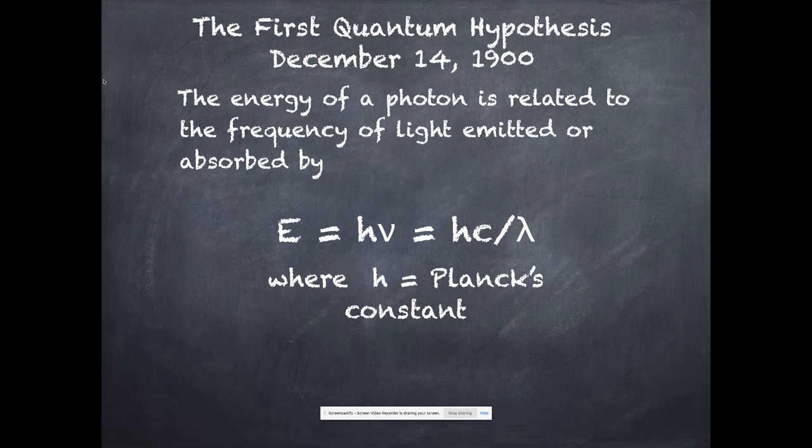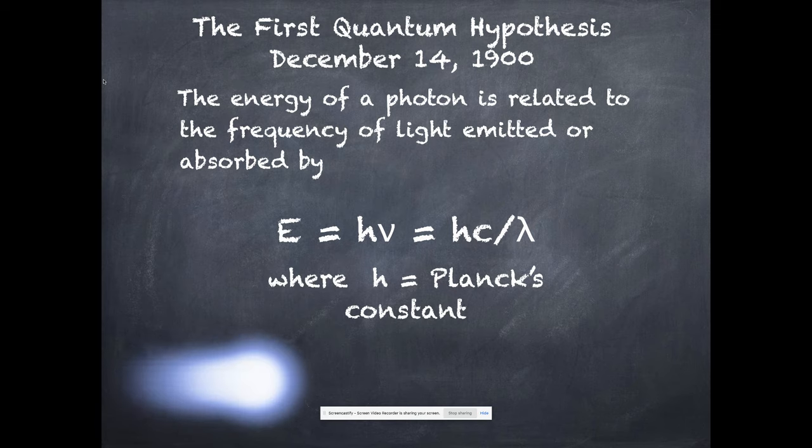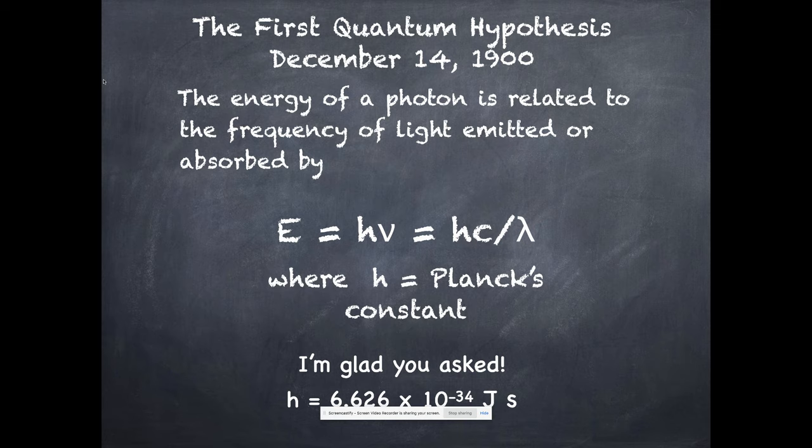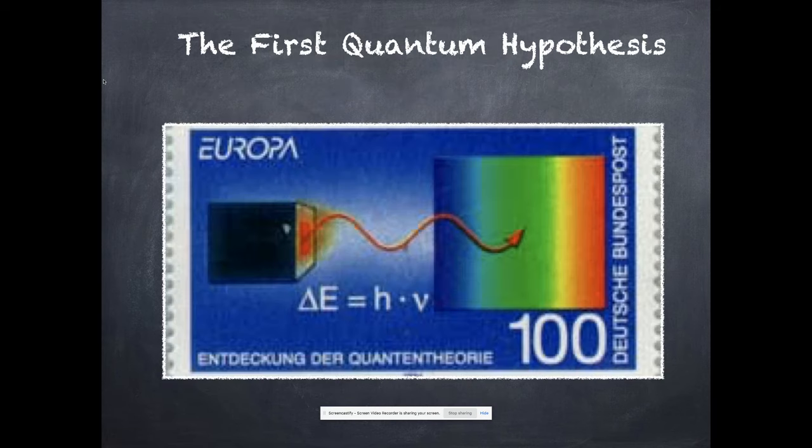And what everyone started saying was, well, it's wrong, but it fits the data. And we can't ignore it because it fits the data. But it really took five years for this idea to get any real endorsement. And just in case you were wondering, the value for Planck's constant is 6.626 times 10 to the negative 34th joules times seconds. Although at the time he wasn't doing it in joules, he was doing it in ergs, which is an antiquated unit. So now there's a great stamp here showing Planck's equation. And it's worth noting that we really should be talking about delta E's because energy is a state function.